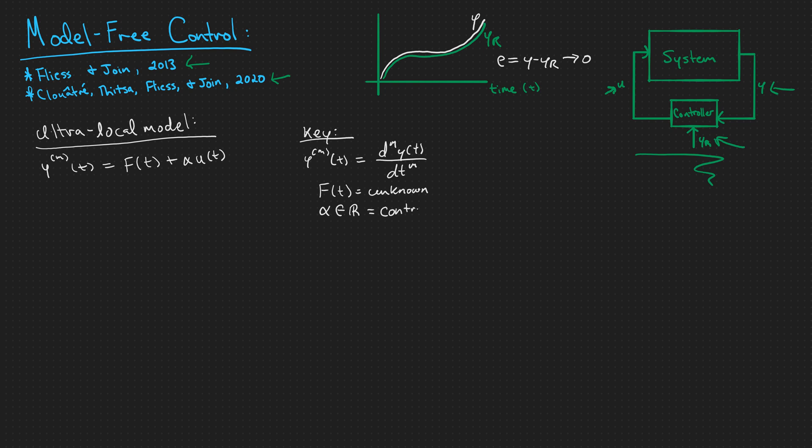So alpha is just a real number, and it is the control gain. It's some constant that we are multiplying the control input by, and of course, u of t is the control input. Now, we can measure y's m-th derivative, or we can measure y and compute its m-th derivative if that is not measurable by us. And we can define a control input u.